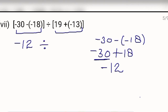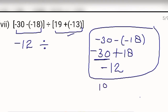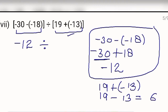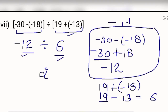Divided by — now solve the second bracket: 19 plus minus 13. Open the bracket: 19 plus minus 13. Signs of both numbers are different, so values will be subtracted. 19 minus 13 is 6, and the sign will be plus because 19 is of plus sign. So this is plus 6. Now minus 12 divided by 6 — 2 sixes are 12. This is of minus sign and this is of plus sign, so minus plus will be minus. Your answer is minus 2.